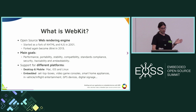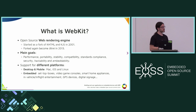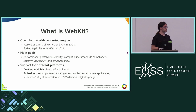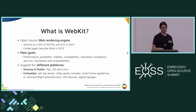WebKit is an open source web rendering engine. It started as a fork of KHTML and KJS in 2001 — the web rendering and JavaScript engines used in KDE for the Konqueror browser. Initially used mainly by Apple, Google also joined as the basis for Chromium. In 2013 Chromium forked it and renamed it Blink. Before that, WebKit actually supported two JavaScript engines — V8 and JavaScriptCore — but after the fork it was cleaned up and now WebKit only uses JavaScriptCore.